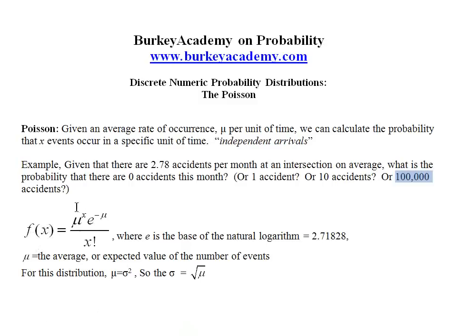Here's the formula that we use to calculate the probabilities for the Poisson distribution. f(x) is just a function that tells us the probability of x number of accidents is equal to the mean, in this case 2.78, raised to the x power, times e, which is the base of the natural logarithm, to the minus mu, so e raised to the negative the mean power, all over x factorial.